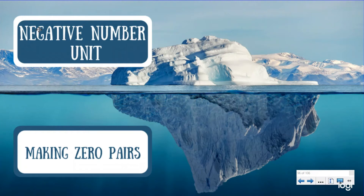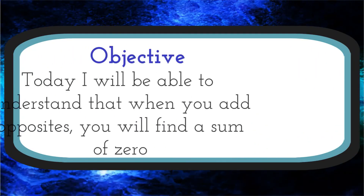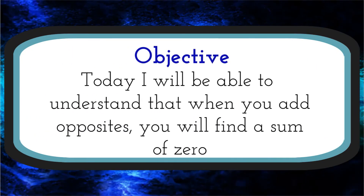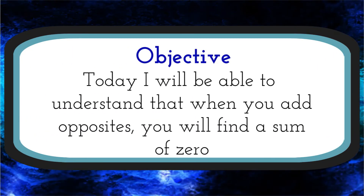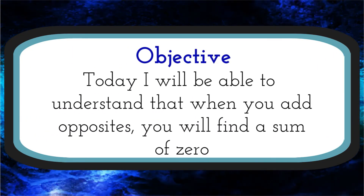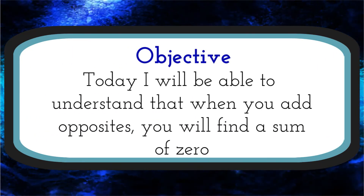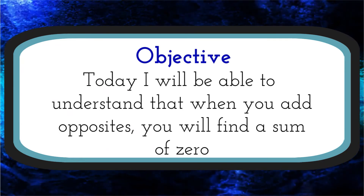What up everybody? Back again here with our negative number unit. Today we're going to be talking about making zero pairs. So let's dive under the water and see what our objective is today. Today I will be able to understand: when you add opposites, you will find a sum of zero.